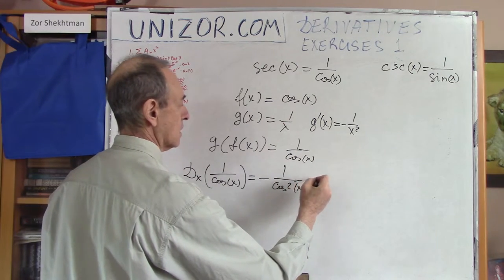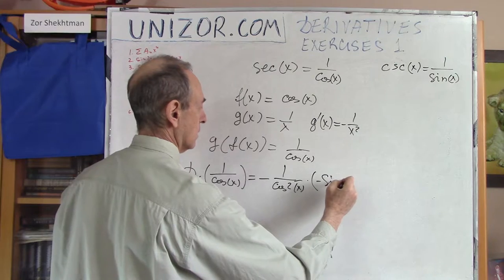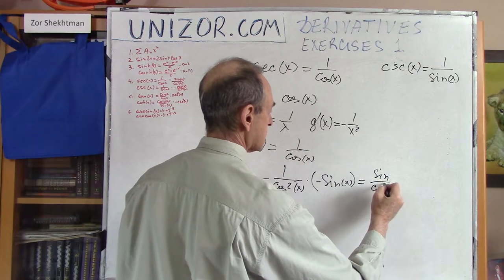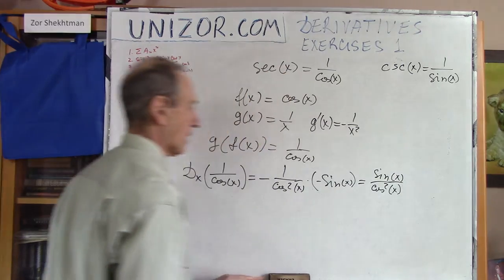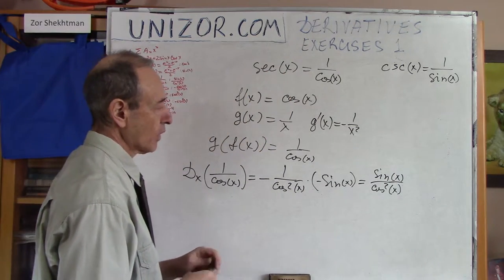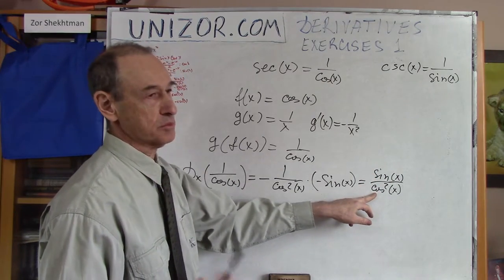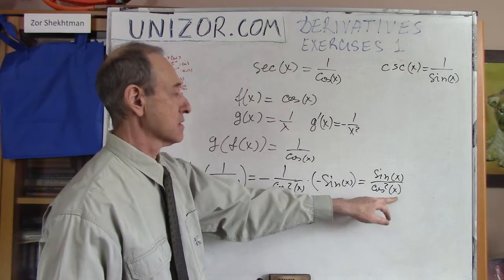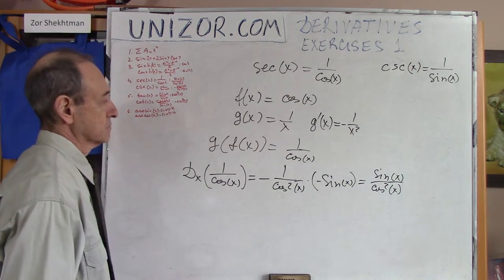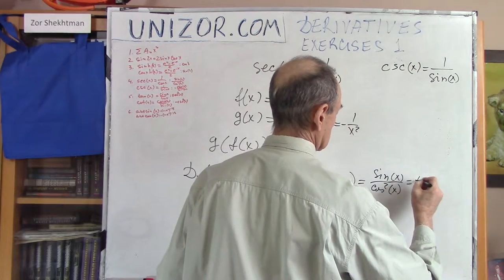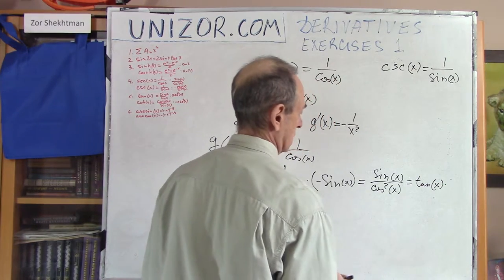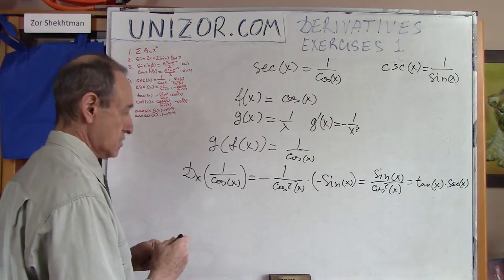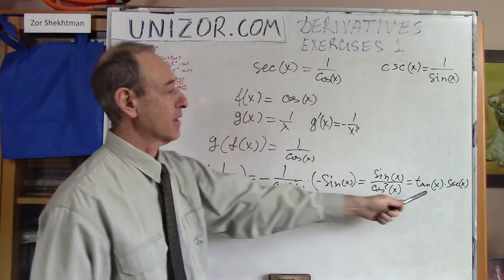So the derivative of 1/cos(x) equals: first differentiate 1/x giving −1/x², but substitute cos(x) for x, giving −1/cos²(x); then multiply by the derivative of the inner function cos(x), which is −sin(x). The result is sin(x)/cos²(x). If you wish, sine over cosine is tangent, and another 1/cosine is secant — so the derivative of secant is tangent times secant.